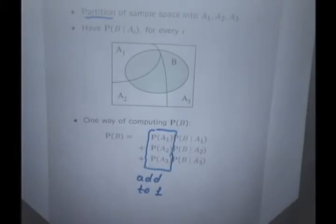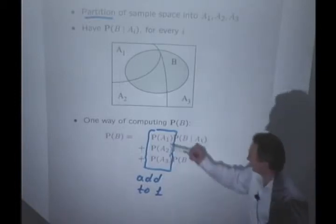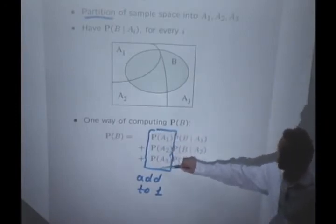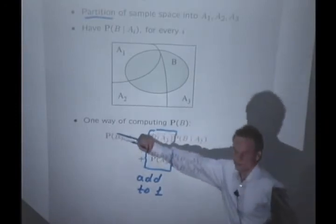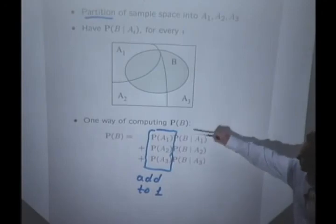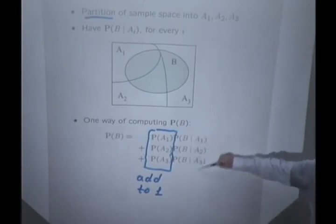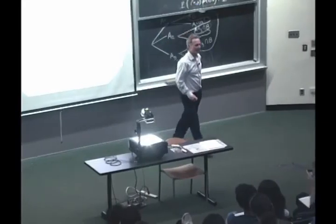Special case. Suppose the three scenarios are equally likely. So P of A1 equals one-third equals to P of A2, P of A3. What are we saying here? In that case of equally likely scenarios, the probability of B is the average of the probabilities of B in the three different worlds or in the three different scenarios.